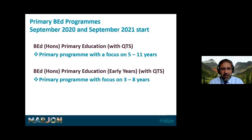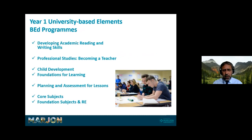Our primary BED programmes have two versions for September 2020 and September 2021 starts. One is Primary Education with QTS, focused on five to eleven year olds, and one is Primary Education with Early Years, focused on three to eight year olds. With QTS — qualified teacher status — at the end of this course you will be a qualified teacher able to go and teach in school.